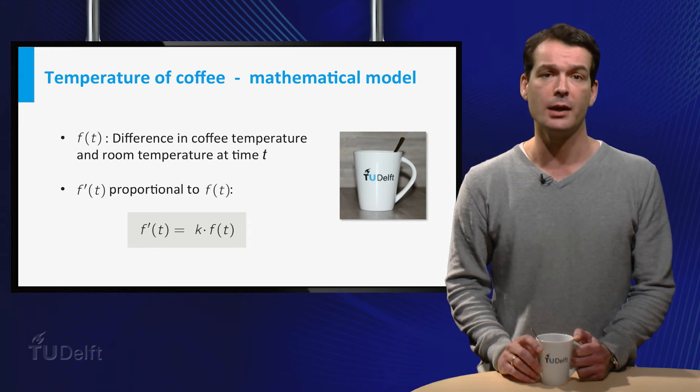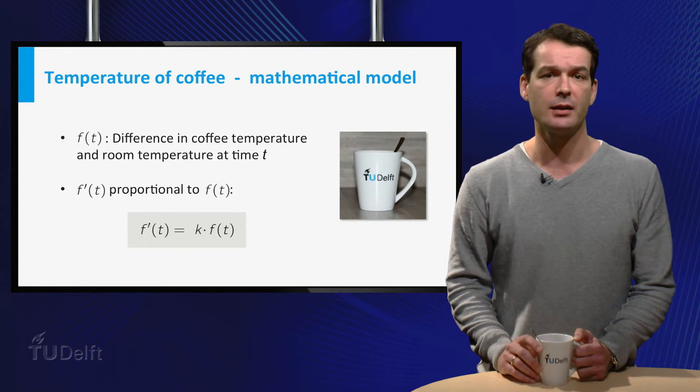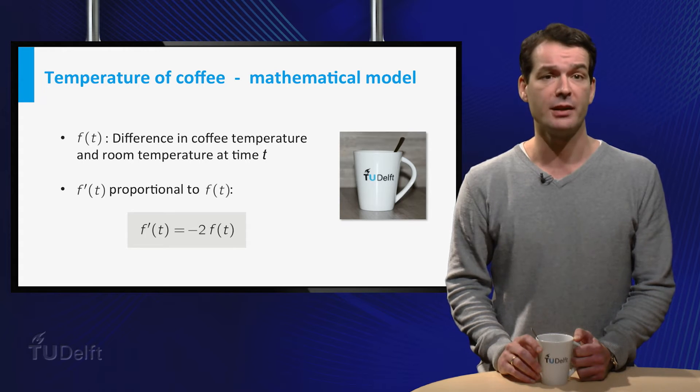We don't know the value of k, however it should be negative because the difference in temperature gets smaller in time. So let's just say that k is equal to minus 2. Now we have obtained the relation f'(t) is equal to minus 2 times f(t).